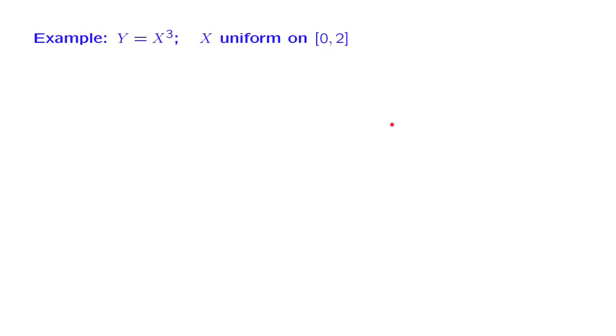In our first example, we let x be a random variable which is uniform on the range from 0 to 2. And so the height of the PDF is 1 half. And we wish to find the PDF of the random variable y, which is defined as x cubed. So since x goes all the way up to 2, y goes all the way up to 8.